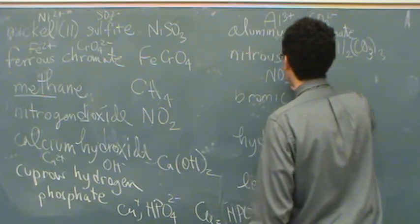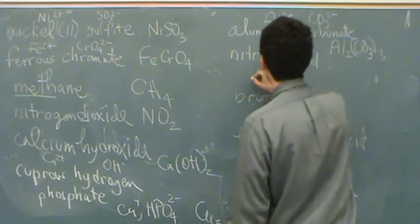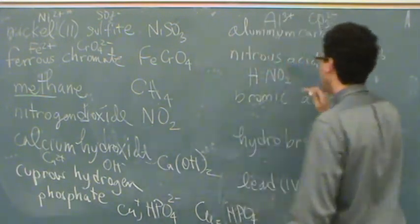Nitrous acid. The -ous tells you it's the one with less charge or less oxygens on the polyatomic. So that's nitrite. Nitrate would be NO3. So we just need an H+ on here, and it's HNO2.